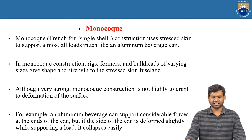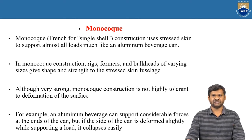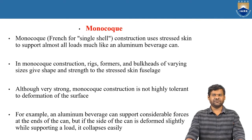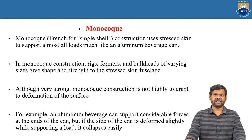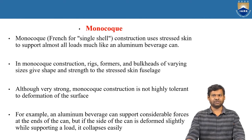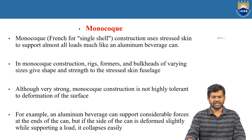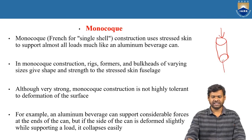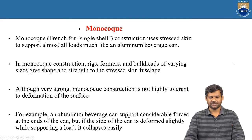Although very strong, monocoque construction is not highly tolerant to deformation of the surface. For example, if we take a beverage can, it can support considerable forces at the end, but if the sides of the can are deformed slightly while supporting the load, it collapses. The thing is, a beverage can can support end loads, but it is very weak in carrying side loads.